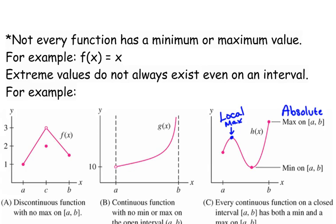It's on an open interval — it does not include A. A and B refer to where the x values start and end. It's a minimum on the interval A to B. We don't know the specific x value.